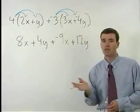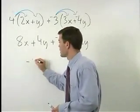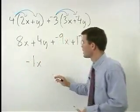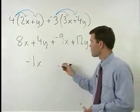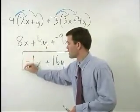Now we can combine like terms. 8x plus negative 9x is negative 1x and 4y plus 12y is plus 16y. And that's our answer.